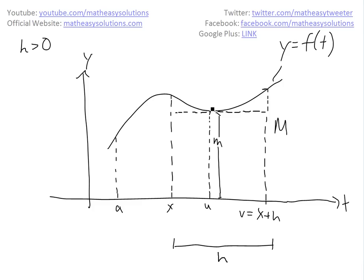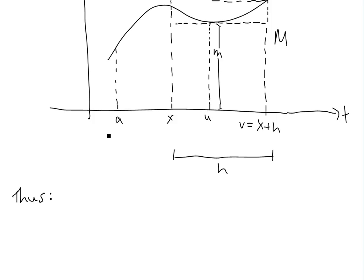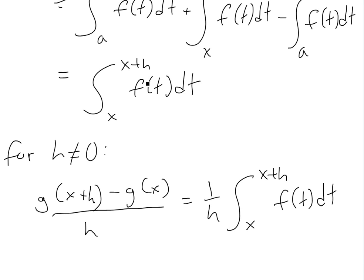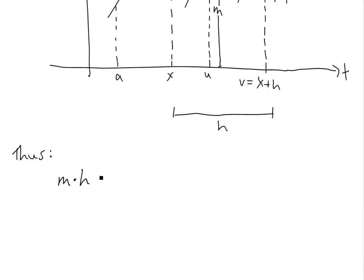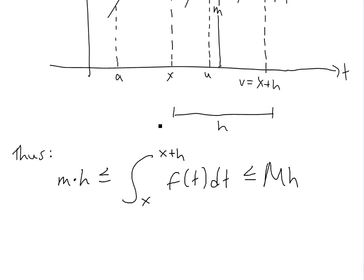The width of the interval is h, going from x to x+h. So you have a minimum rectangle of m times h, and a maximum rectangle of capital M times h. What I'm trying to show is that this is the maximum area and this is the minimum area. So we can write: little m times h is less than or equal to the integral from x to x+h of f(t) dt, which is less than or equal to capital M times h. Also, u and v are both between x and x+h, so they're inside this region.